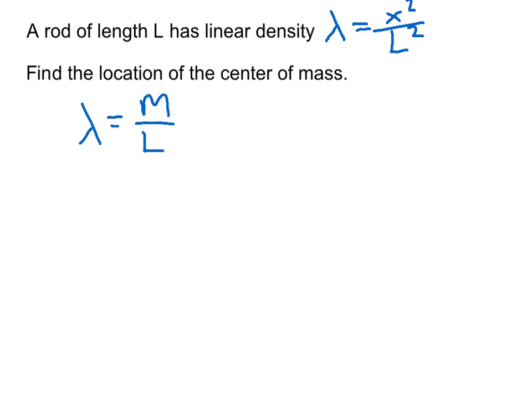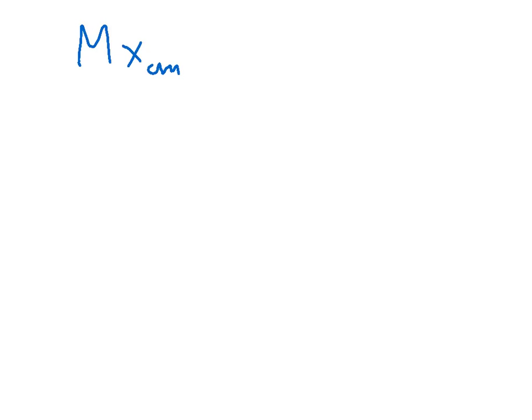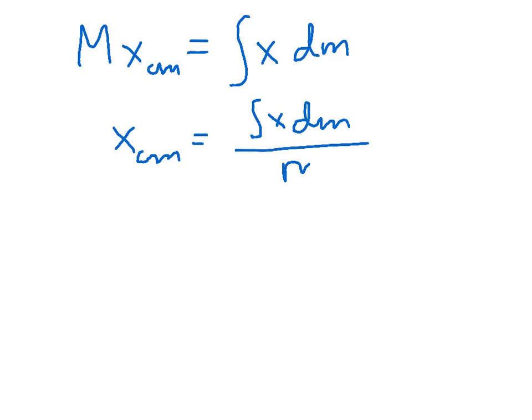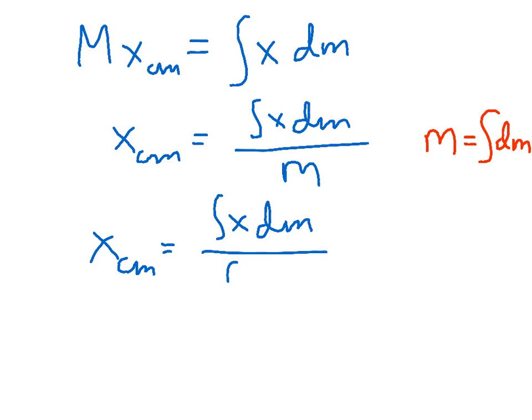Our general equation for finding the center of mass of a non-uniform object is: total mass times x center of mass equals the integral of x dm. We take a tiny bit of mass and its location, and by integrating we add up all those little bits to find the center of mass. Rearranging, x center of mass equals the integral of x dm over the total mass, where total mass is just the integral of dm.